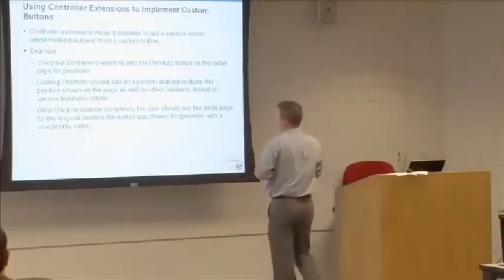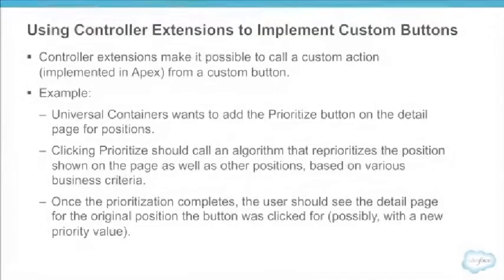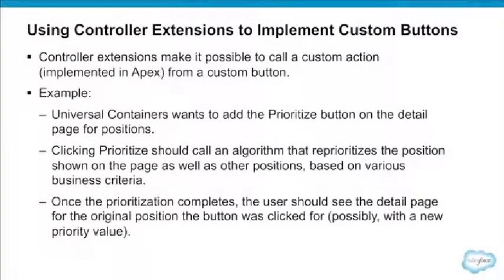Here's the use case in this example: Universal Containers wants a prioritize button on the detail page for positions. It should execute some Apex logic which reprioritizes positions and then takes the user back to the original requesting page.